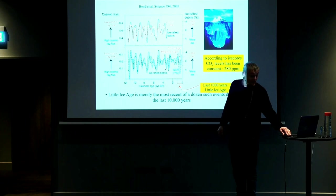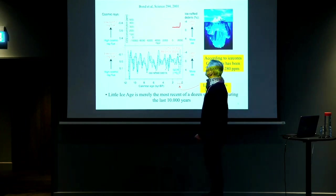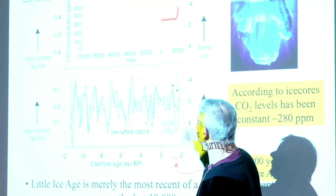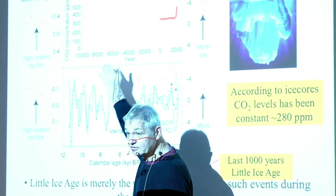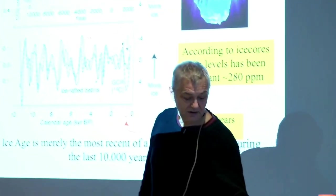Everybody is talking about how CO₂ has been changing, but the change in carbon dioxide is mainly a recent phenomenon. Over the last 10,000 years, the CO₂ has been more or less constant. That means it's not CO₂ that can explain this variation — that is out of the question. So it is solar activity.